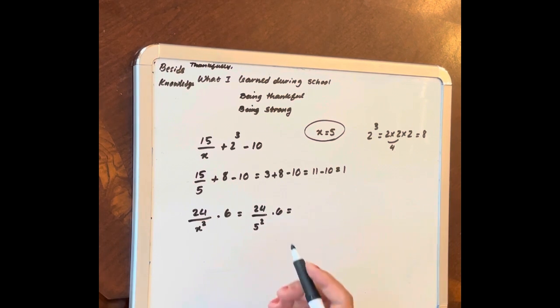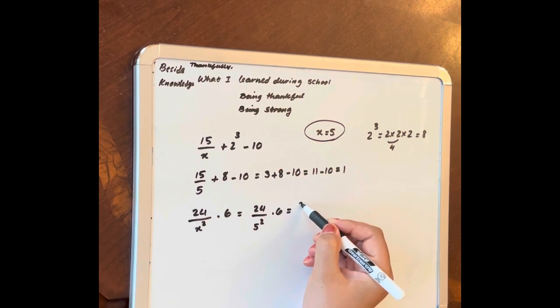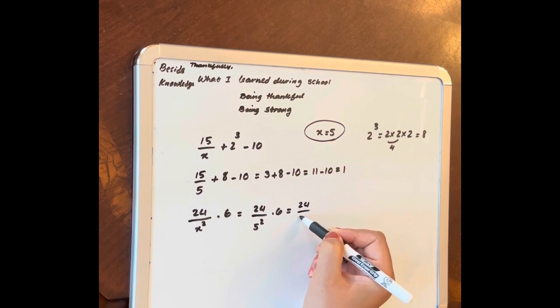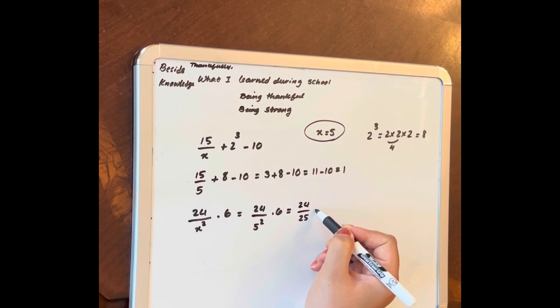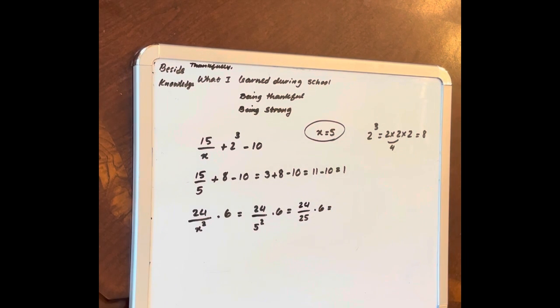So it's going to be 24 over 25 multiply by 6 is equal to... you need the calculator for this.